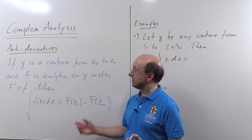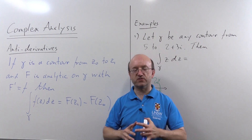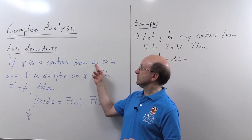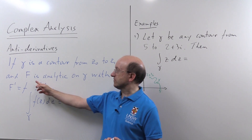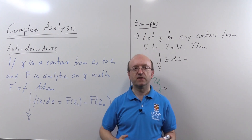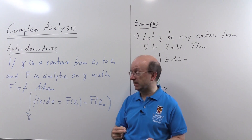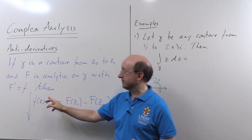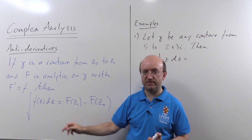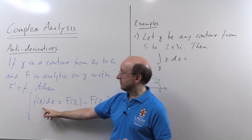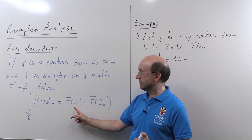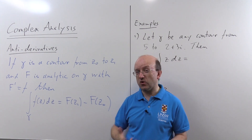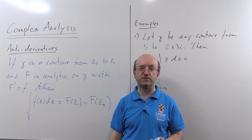This is based on this theorem I've written up here. If gamma is a contour — remember that's just a curve that's piecewise smooth, with a finite number of corners at most — from a point Z₀ to a point Z₁, and you've got a function big F that is analytic on the contour gamma, and it has the property that the derivative of big F is little f, we call big F the antiderivative of little f. Then the integral along gamma of f(z) dz is the value of the antiderivative at the end minus its value at the beginning. So the value of the integral only depends on the endpoints, assuming you can find this antiderivative function.